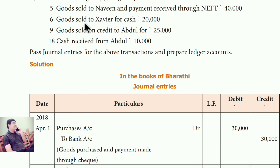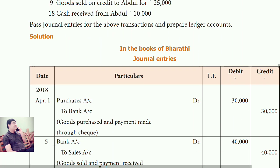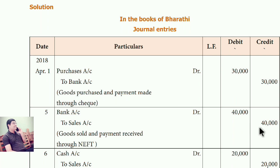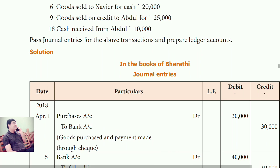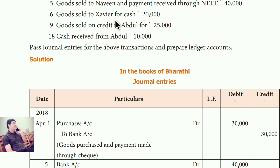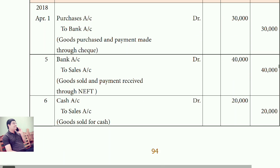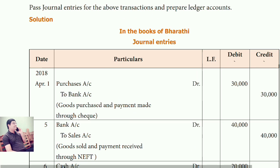Next: goods sold to Navi, payment received through NEFT — through bank. You sold the goods, so that is sales, which is a credit. The money comes into your bank, so bank is debited. Entry: Bank account debit, to sales account, 40,000. Next: goods sold to Xavier for cash. Cash comes in, so it is debited. Sales is credited. Entry: Cash account debit, to sales account, 20,000.